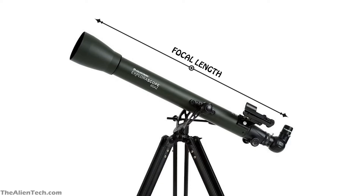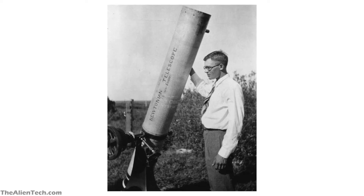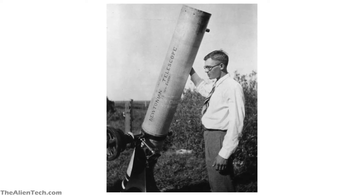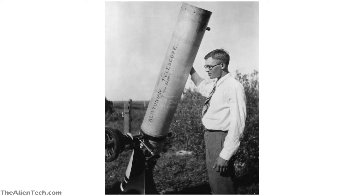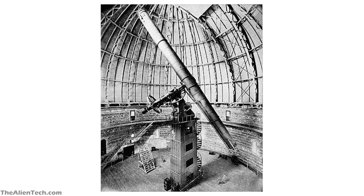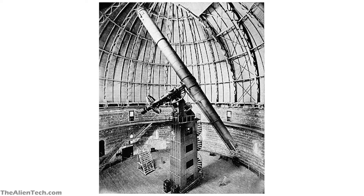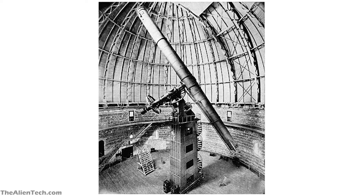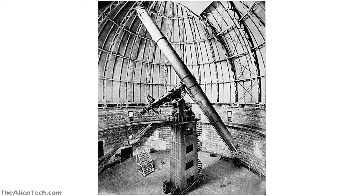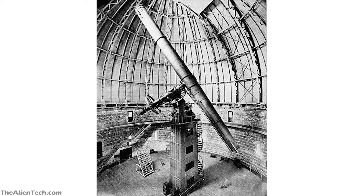This is true in the case of refractor telescopes. In the old times, they used to build long telescopes with longer focal lengths. At the time, lens crafters produced better products than mirror makers, so most of the telescopes during that period were refractor-type. That's why the telescopes from older times have very long tubes, ultimately giving you a higher magnification.